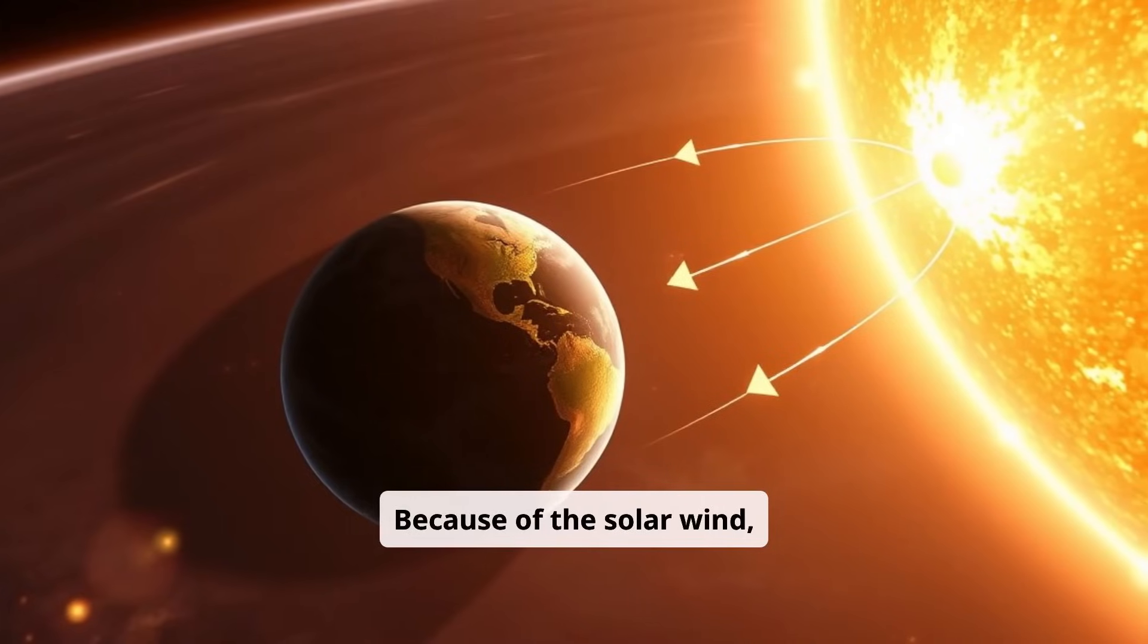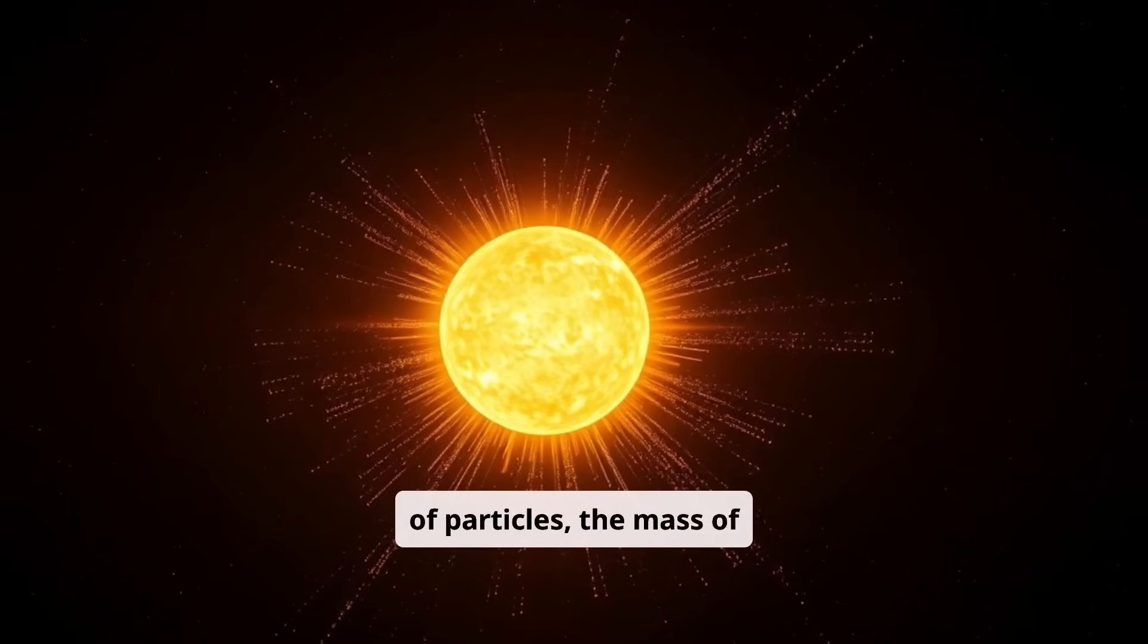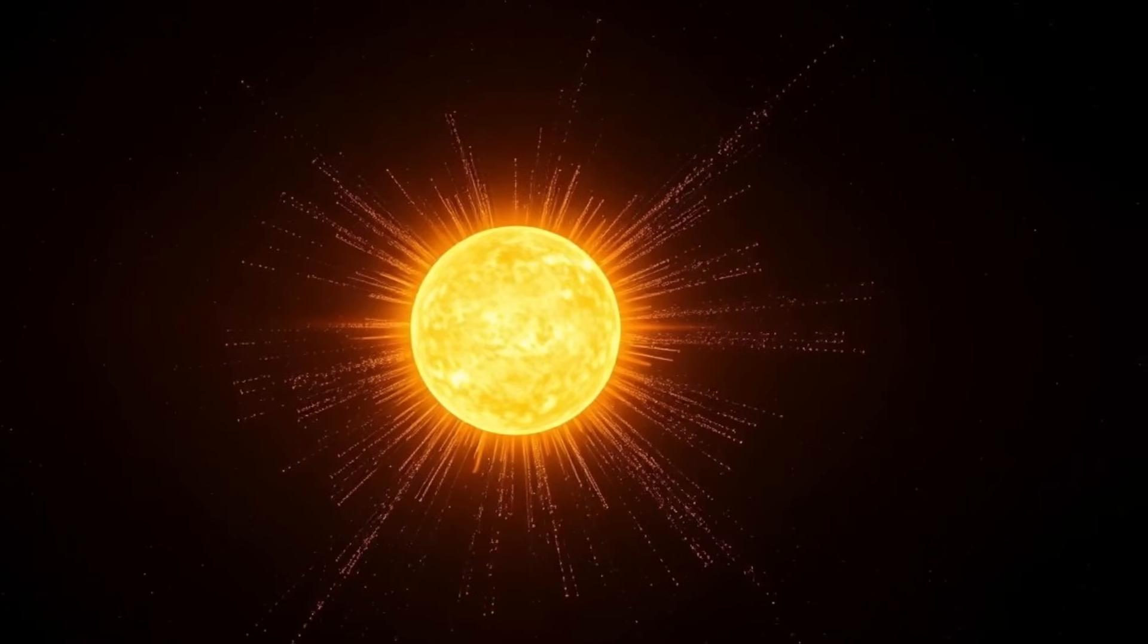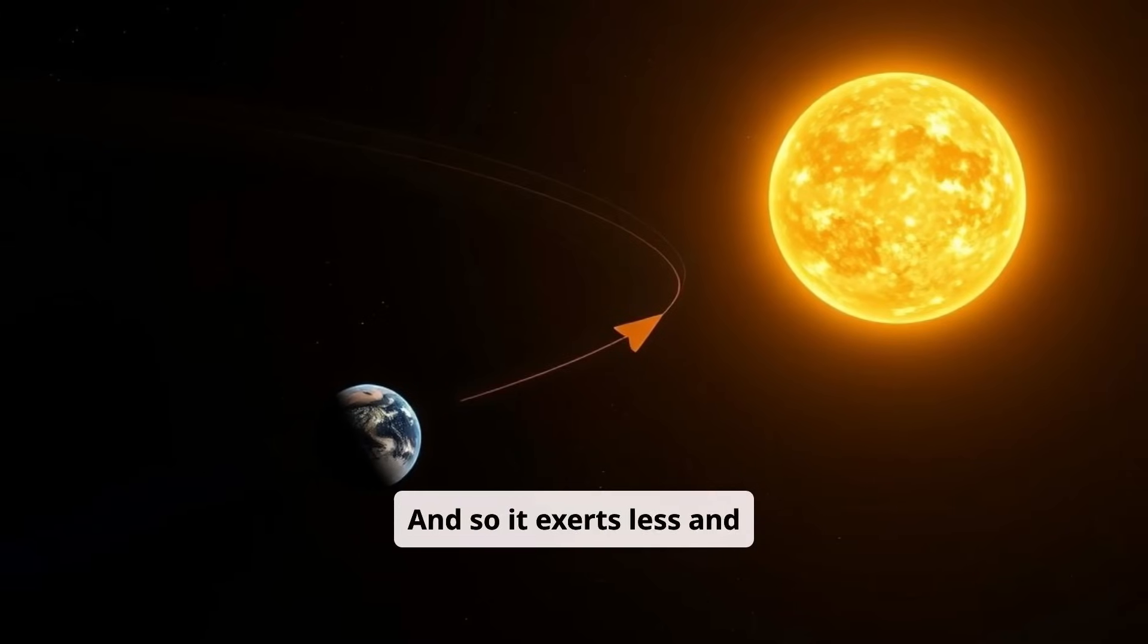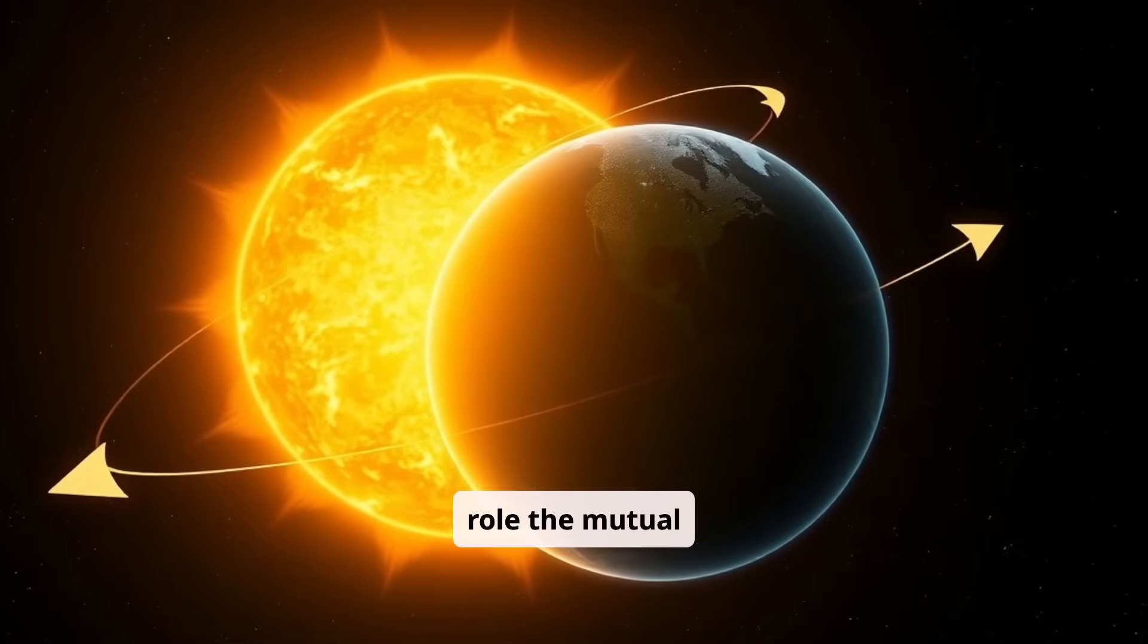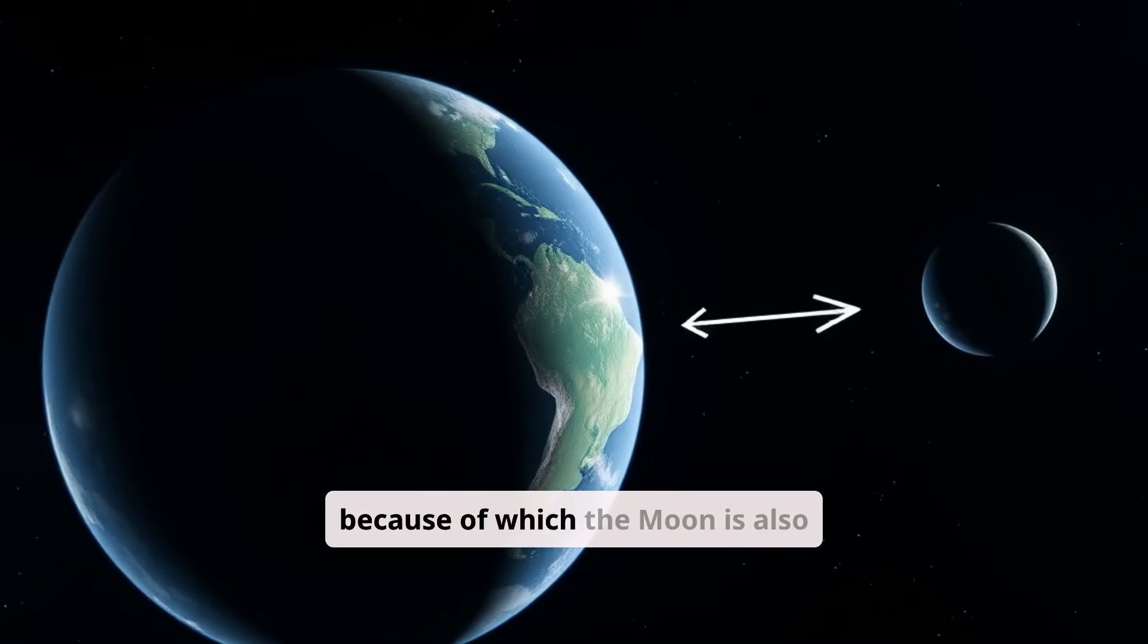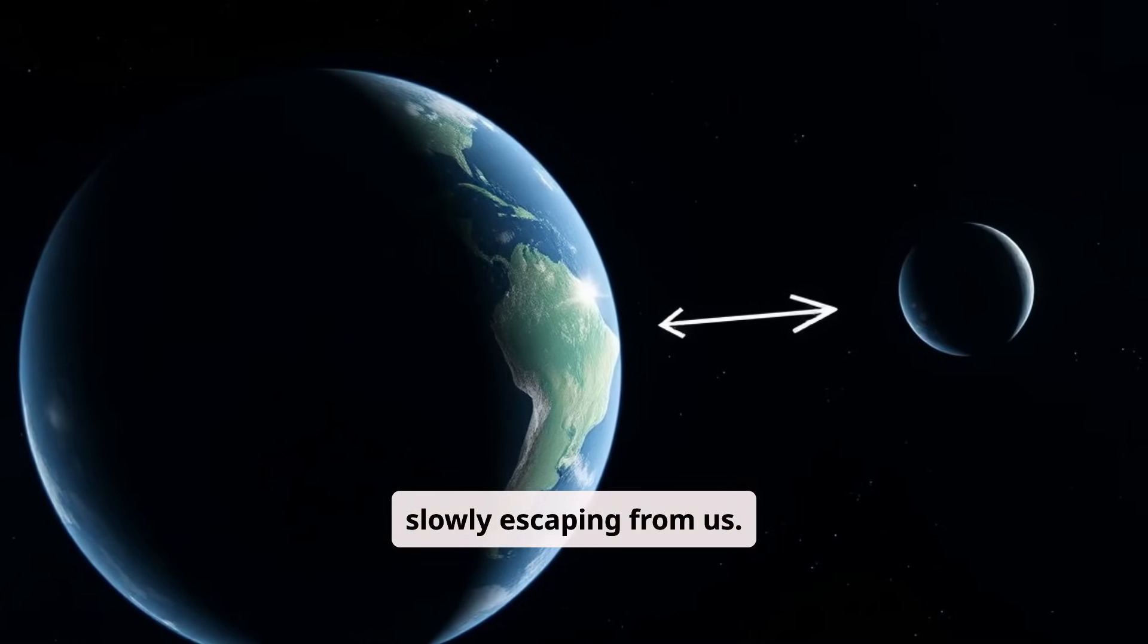Because of the solar wind, which blows away a large number of particles, the mass of our star is slightly decreasing. And so it exerts less and less gravitational force on the planet. Tidal forces also play a role, the mutual interaction of the Sun, the Moon, and the Earth, because of which the Moon is also slowly escaping from us.